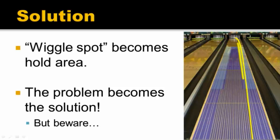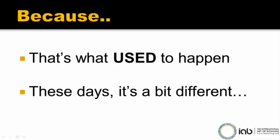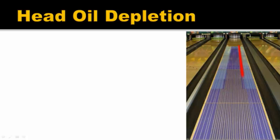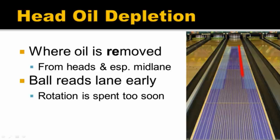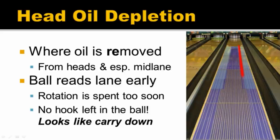But beware — remember at the start of this section I said this is what used to happen. These days, things are a little bit different. Modern reactive bowling balls actually remove the oil from the lane — from the heads and especially from the mid lane where the oil gets thinner. Where I had a yellow line drawn before, there's now a red line, indicating where oil has been removed. What happens then is that if you stay on the same spot, your ball can read the lane a little bit too early, and the rotation you've created from your release is spent up too soon. The ball straightens up and there's no hook left at the back of the lane.